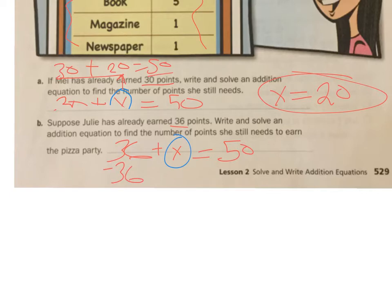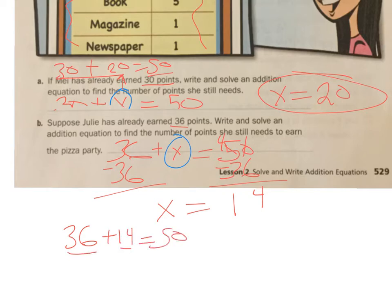I'm going to get rid of this 36 over here and then take it away over here. So 36 minus 36 is 0. These are just the X equals. I do the subtraction problem. 10 minus 6 is 4. And 4 minus 3 is 1. So I have X equals 14. I'm going to put that into my equation just to make sure. And if I add 36 plus 14, it gets me to 50, which equals 50, which means that is accurate. So X equals 14. Julie needs 14 more points so that she can earn a pizza party.